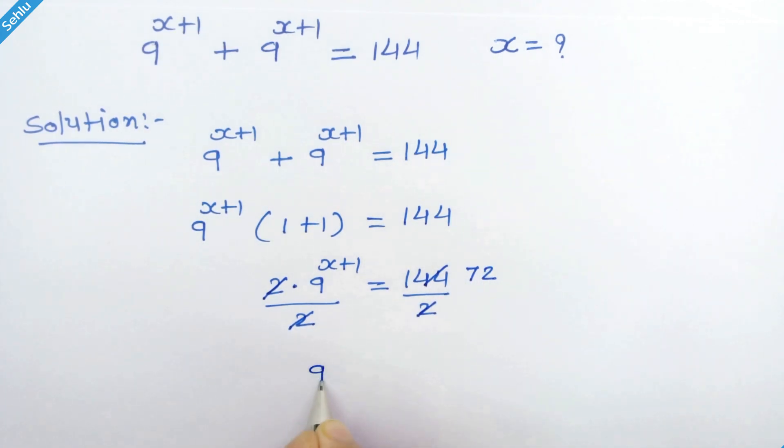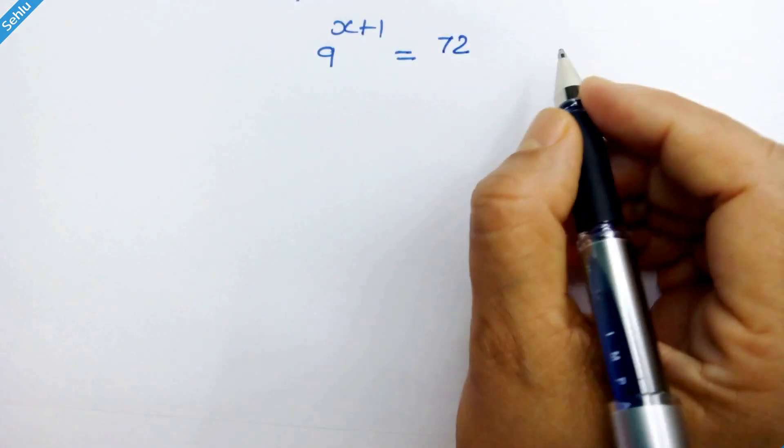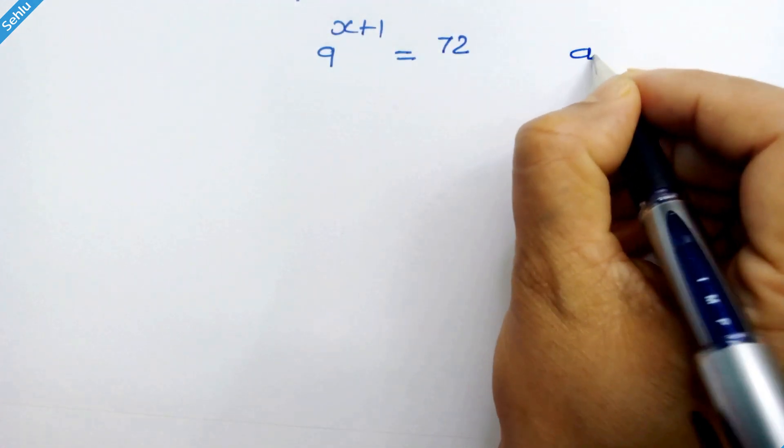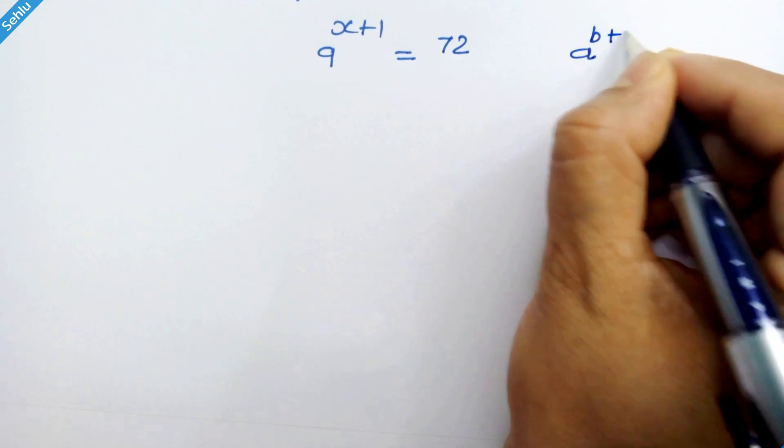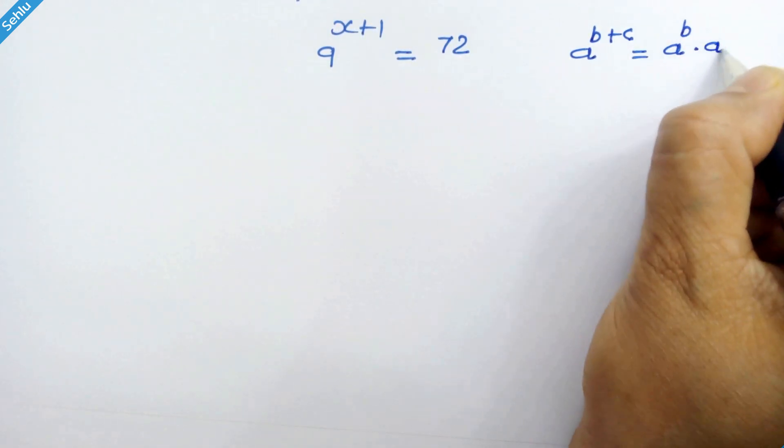So in the next step we have 9 raised to x plus 1 is equal to 72. Now let's check this rule: if we have a raised to b plus c, then it can be a raised to b times a raised to c.